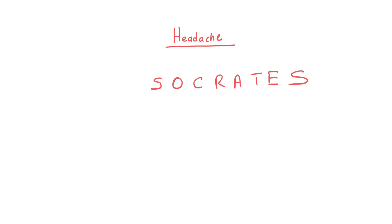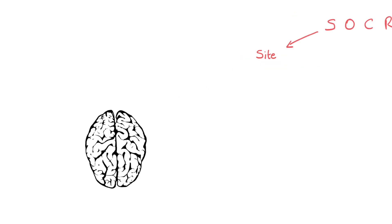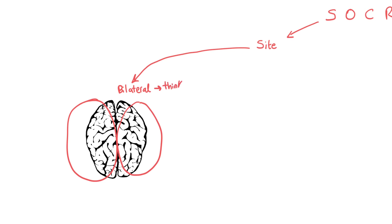So let's start with S, which stands for SITE — basically where is the pain of the headache starting from. Knowing the site is very important. If the patient is complaining of headache and the pain is bilateral, affecting both sides of their head, you can start thinking of tension-type headache.